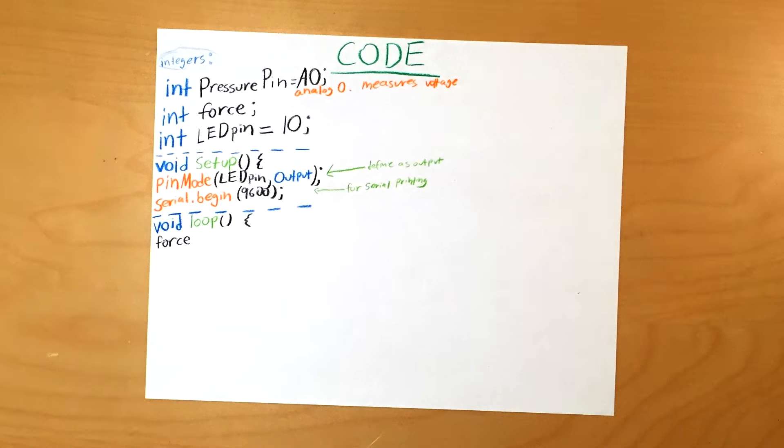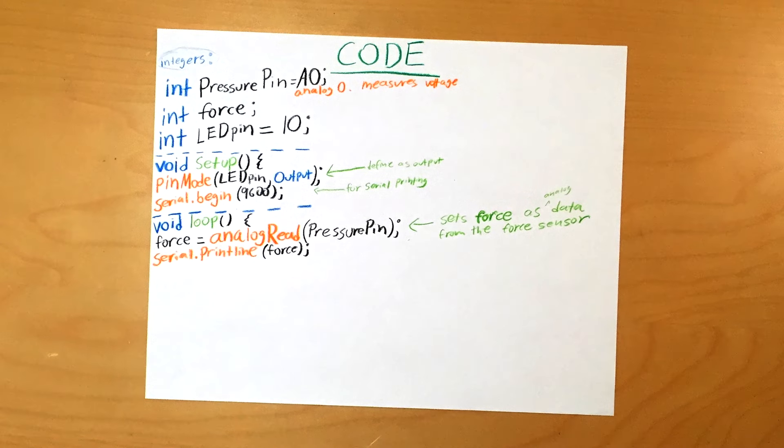Now in void loop, let's start by setting force equal to analog read pressure pin. This will set force to a measured voltage. Then add the command serial print line force.